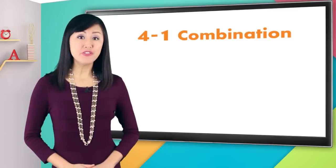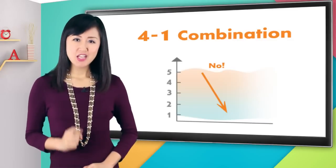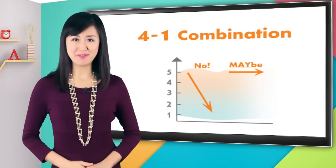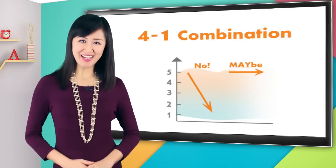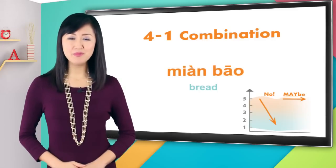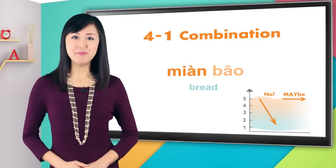Remember, fourth tone is like an emphatic no, so the four-one combination is like 'no, maybe.' Sound a bit silly, right? Well, the sample Chinese word is mian bao. No, maybe. Mian bao. Mian bao means bread. Say it with me: mian bao, mian bao.